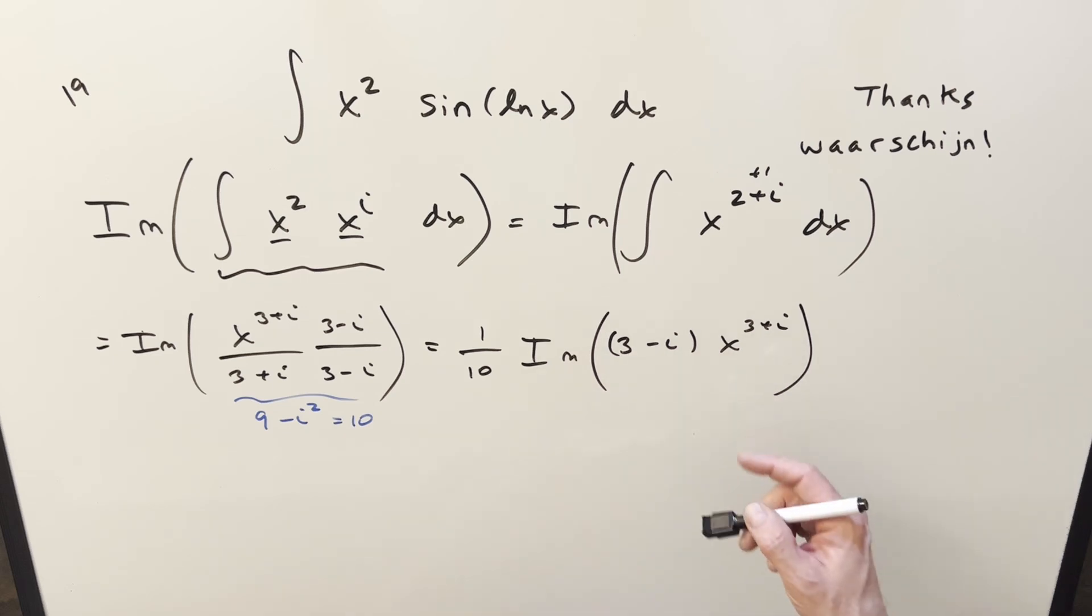Now, for x to the 3 plus i, I can break this up again, put it back the way we had it over here. So x to the 3 plus i can be written as x cubed times x to the i. But then again, x cubed is going to be strictly real, and I can take this outside of the expression and bring it over here. And then for x to the i, I just want to put that back to the way we had it. Remember, this was the same thing as e to the i ln x, and then this was the same thing using Euler's formula as cosine ln x plus i sine ln x.